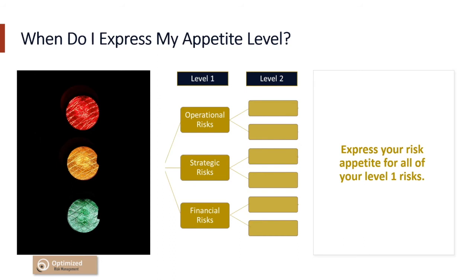You may also want to define appetite levels for your level 2 risk if they deviate from your appetite defined at level 1. For example, you may decide that you have a moderate appetite for operational risk in general, but perhaps you have a low appetite for operational risk associated with the likelihood and impact of fraud occurring. Keep in mind that there is no right or wrong answer for this exercise. Your appetite level is truly dependent on your comfort with accepting, maximizing, or limiting your risk in order to achieve your business objectives, regardless of whether the level may be deemed inappropriate by others.